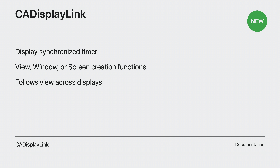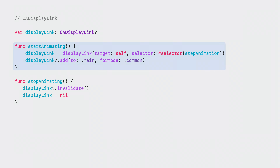The best approach is to get a CADisplayLink object from the most specific applicable element, usually a view. When created from a view or window, the CADisplayLink will automatically track whatever display the view or window is on as it moves around the desktop, including suspending itself when not on a display. In this view subclass, when startAnimating is called, two lines of code create a DisplayLink to call its stepAnimation function synchronized to the view's display, and add the DisplayLink to the main run loop for common modes. When the animation is complete, call invalidate to stop the DisplayLink and remove it from all registered run modes.